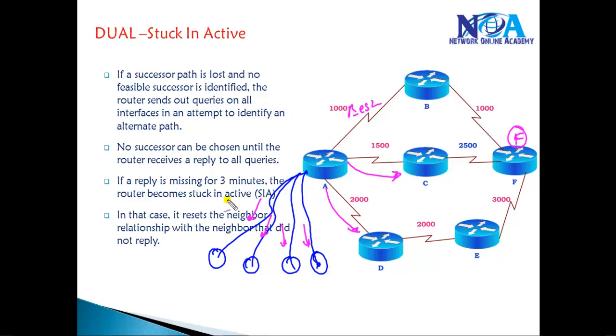In this scenario, normally as per the default stuck in active state, the router is going to expect a reply from each and every neighbor. It's going to wait for maximum of three minutes and then after that reset the neighbors. This process adds extra overhead on the EIGRP routers to process these query and reply messages.